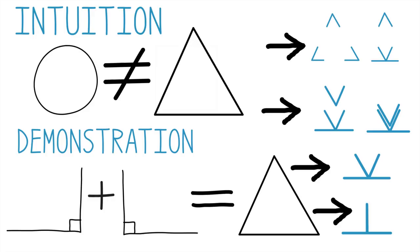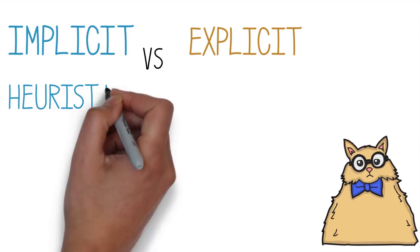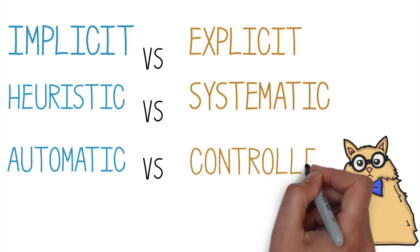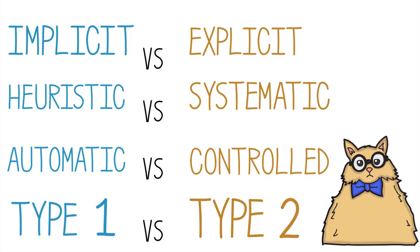Contemporary thinkers still draw a similar distinction, using a variety of labels for it. Psychologists draw contrasts between implicit versus explicit thinking, heuristic versus systematic, automatic versus controlled. It's been argued that these different labels are marking a common divide. And in the spirit of neutrality, the two sides are now often labeled type 1 and type 2 thinking. But you will also commonly see the type 1 side labeled intuitive and the type 2 side as reflective.